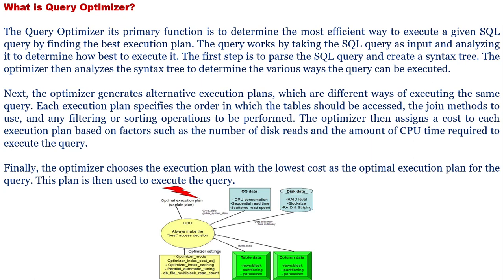Next, the optimizer generates alternative execution plans, which are different ways of executing the same query. Each execution plan specifies the order in which tables should be accessed, the join methods to use, and any filtering or sorting operations to be performed. The optimizer then assigns a cost to each execution plan based on factors such as the number of disk reads and the amount of CPU time required to execute the query.